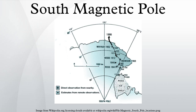Due to polar drift, the pole is moving northwest by about 10 to 15 kilometers per year. Its current distance from the actual geographic south pole is approximately 2860 kilometers. The nearest permanent science station is Dumont d'Urville Station. Wilkes Land contains a large gravitational mass concentration.